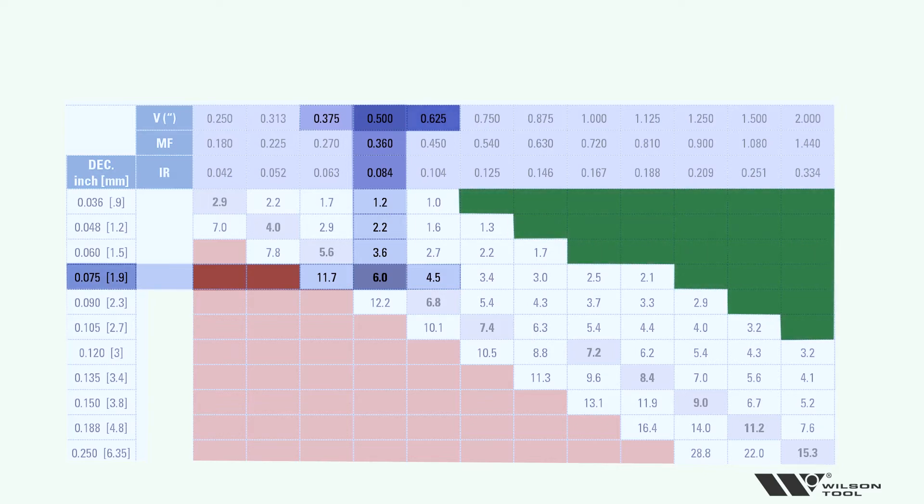And we said green is good. So tonnage wise, you can go as far to the right as you'd like to go. It'll hold the tonnage down, but your inside radius and your V opening will still be affected. So your inside radius is going to grow, your minimum flange is going to grow.